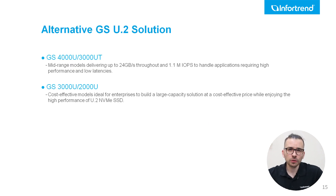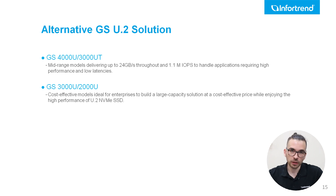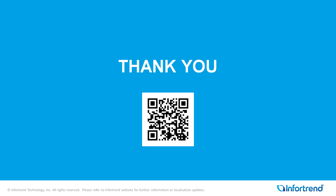In addition to EON Store GS5000U, Infortrend offers a comprehensive range of U.2 NVMe hybrid flash storage solutions. We also have GS4000, 3000, and 2000U series, each catering to different workload needs and budget constraints. Thank you very much for watching today's video. Please feel free to scan the QR code on your screen to go directly to our website and check out our new products. We will be waiting for your feedback and will be back with new announcements soon, so please stay tuned.